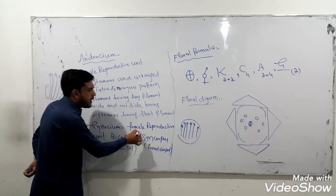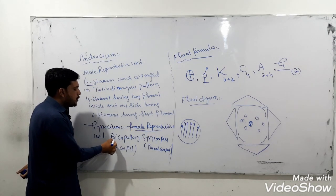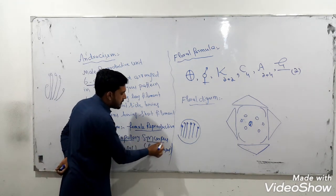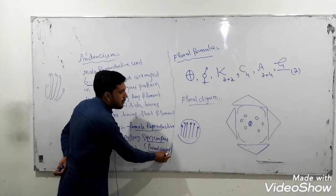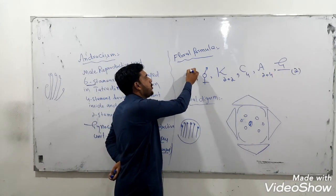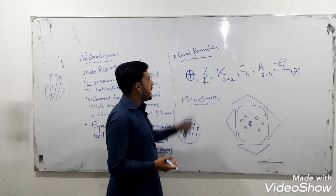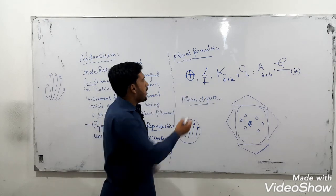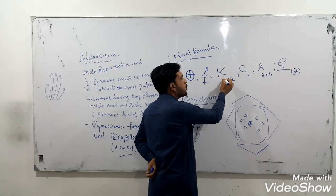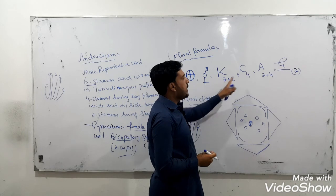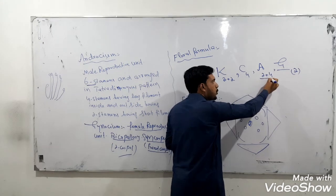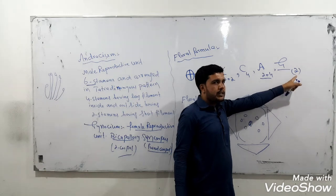The gynoecium is the female reproductive unit of the plant. The gynoecium is bicarpellary, having two carpels, and syncarpous — the carpels are fused. The carpels are fused and the stamens are attached in a tetradynamous pattern, which is a two plus four pattern. The ovary is superior and the gynoecium is syncarpous.